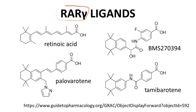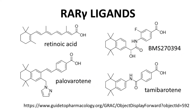Ligands for retinoic acid receptor gamma are not new. In the upper left we have retinoic acid, the endogenous ligand for the receptor, and in the lower left is palaveratine. Other reported retinoic acid receptor gamma agonists include BMS270394, which is not a drug, and temaberatine. All these compounds bind retinoic acid receptor gamma. Retinoic acid, palaveratine, and the BMS compound are selective for the gamma isoform, while temaberatine is actually selective for retinoic acid receptor alpha. You can see striking structural similarities among these compounds. Achieving selectivity for one isoform over another is challenging.